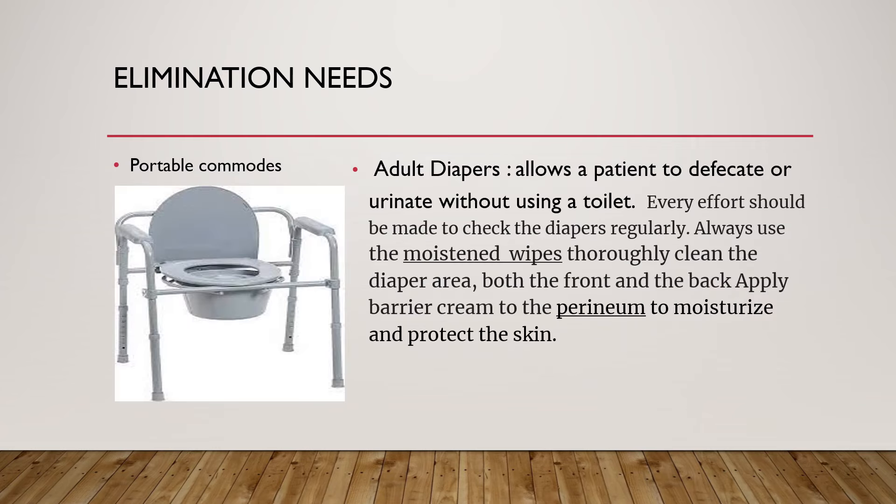The portable commode is a medical commode that looks like a chair and has a bucket-like receptacle beneath it which can be removed for cleaning. Using this commode is a better option than going to the bathroom every time the need to urinate strikes.